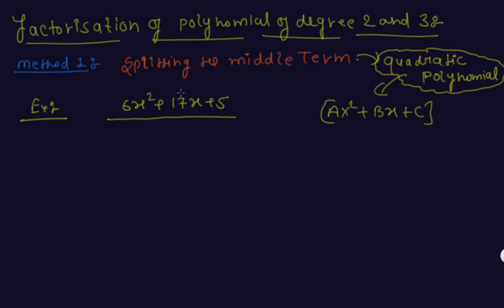We take the middle term 17x. The first term is 6x², the second term is 17x, and the third term is 5. Now we need to find two numbers whose sum is 17.